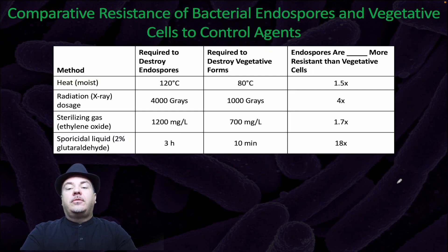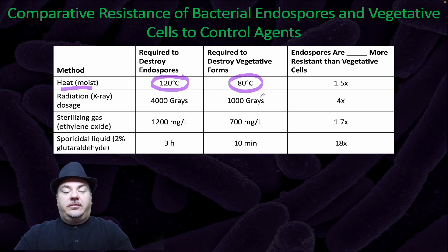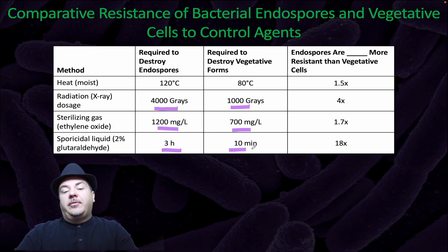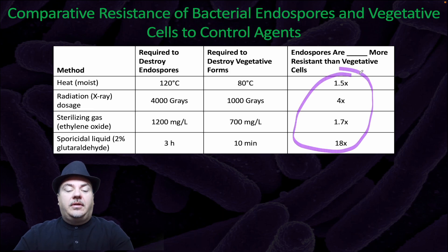If we compare endospores to vegetative cells, we can see that for moist heat, you require 120 degrees Celsius to kill endospores, but only 80 degrees to kill vegetative cells. Similarly, you require a higher dose of radiation, more sterilizing gas, or more of a sporicidal liquid with longer time exposure to kill endospores versus vegetative cells. So endospores are much more resistant to these treatments than vegetative cells are.